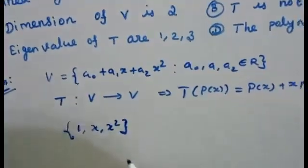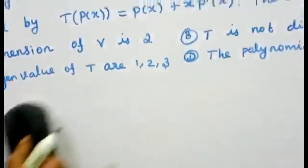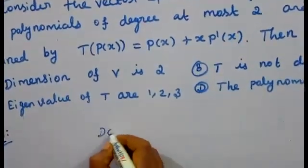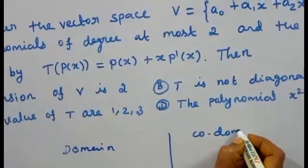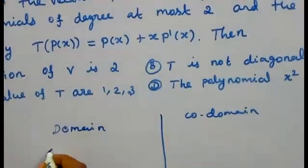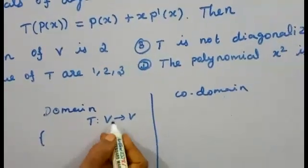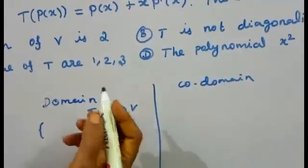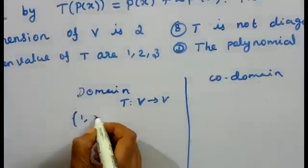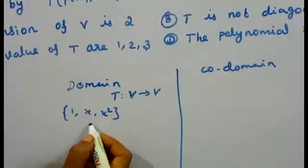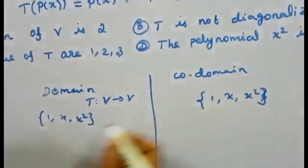Next, we calculate the matrix of T. For polynomials of degree at most 2, the standard basis is {1, x, x²}. The domain basis and codomain basis are both {1, x, x²}. We apply the transformation to each basis element.